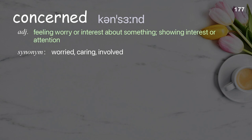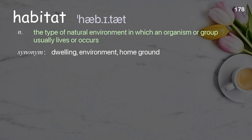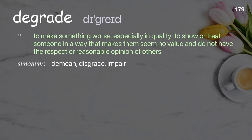Concerned: feeling worry or interest about something; showing interest or attention. Examples: persons concerned; concerned citizen. Habitat: the natural environment where animals or plants live. Examples: a marine habitat; threatened habitat; the habitat of this bird is freshwater areas and saltwater marshes.